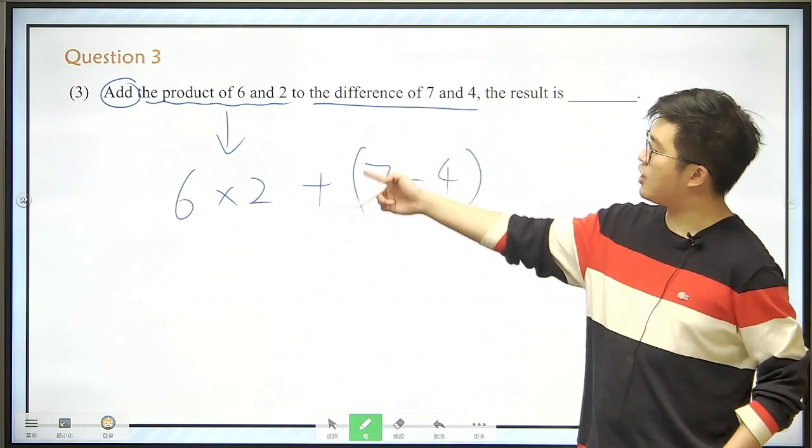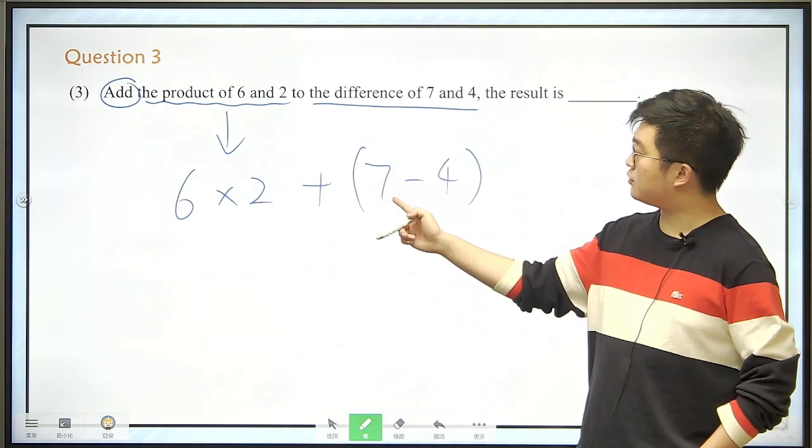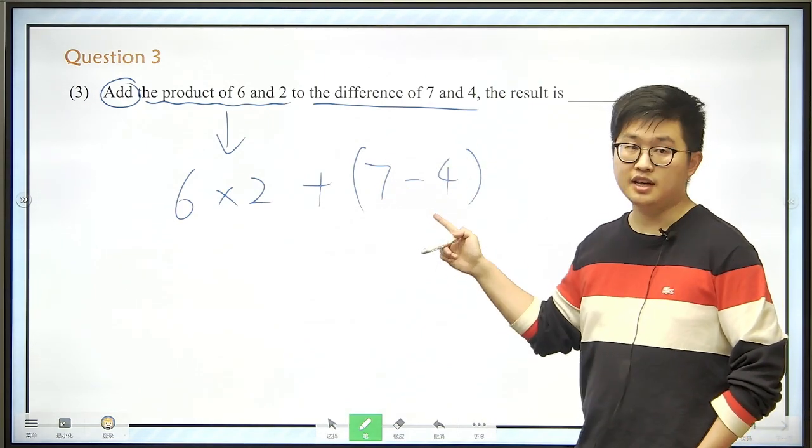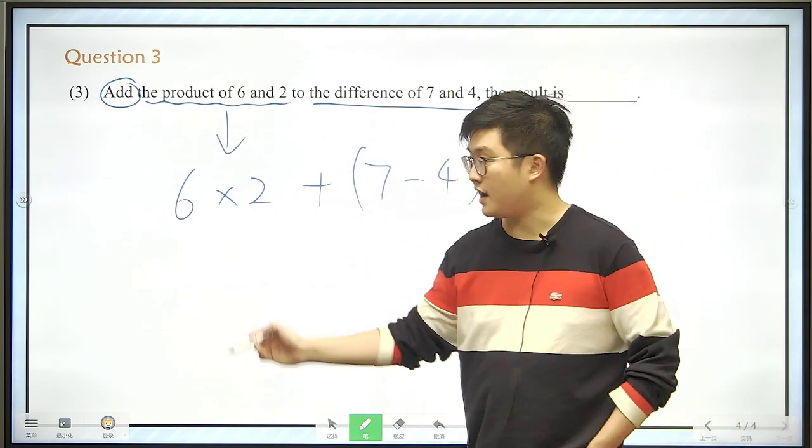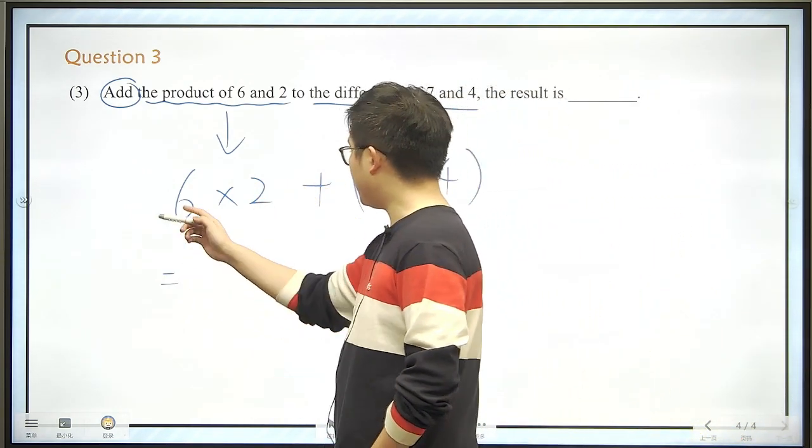So just add them up, alright? Add them up, don't miss the brackets, because we need to calculate the difference. Then add it to the product. So if you do this correctly, then the rest part of it would be very, very easy.